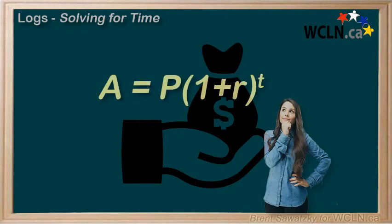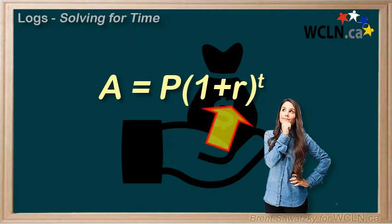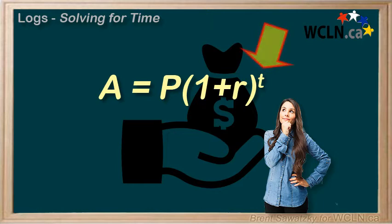At this point, we've learned how to solve for every variable in our compound interest formula. We've solved for the amount A, the principal P, and even the rate r. And the only one left is our time, t — our exponent.